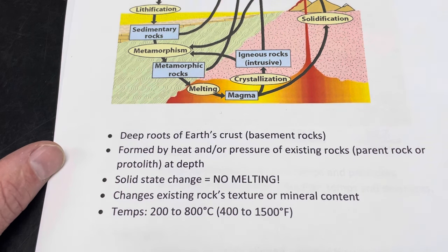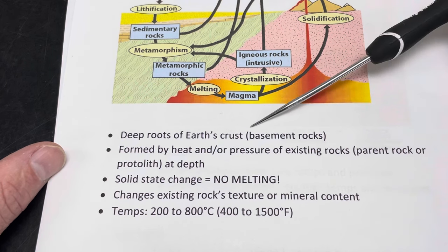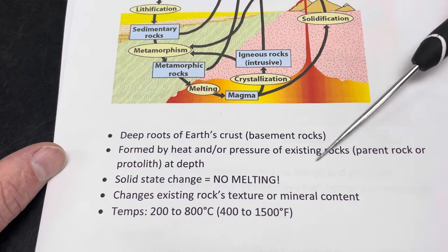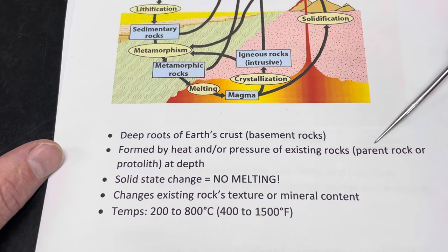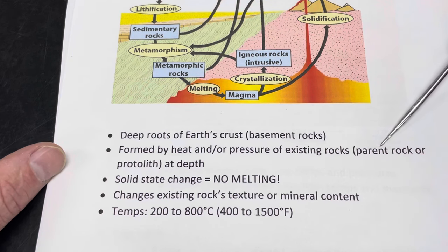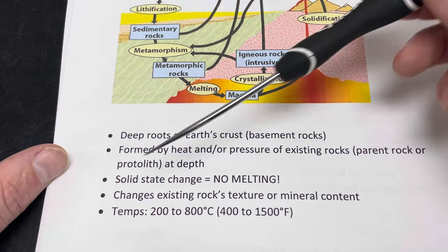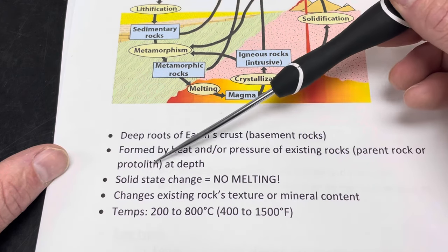Heat and pressure are the big driving processes here. So we're going to take existing rocks — any type of existing rock — and we call that rock that existed before it became a metamorphic rock either the parent rock, or another term you sometimes hear is protolith, meaning 'before.'